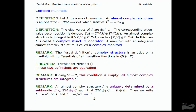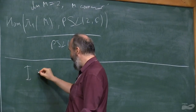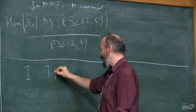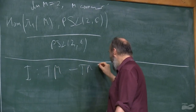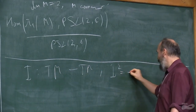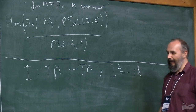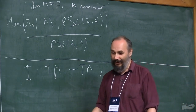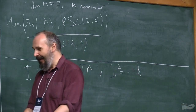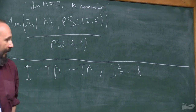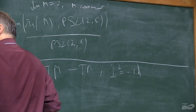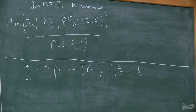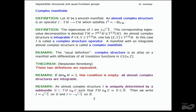First, we should do linear algebra as usual. I will speak about complex structures, and complex structures are maps from TM to TM, where I² equals minus the identity. If M has bigger dimension than one, you have to add some extra assumption of integrability, but mostly we won't.